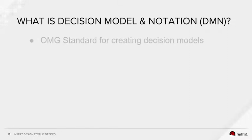What is DMN? DMN is an OMG standard for creating decision models. OMG, or the Object Management Group, is the same organization that brought you BPMN 2, the Business Process Model Notation version 2 standard. DMN is to decision modeling what BPMN 2 is to business process modeling.